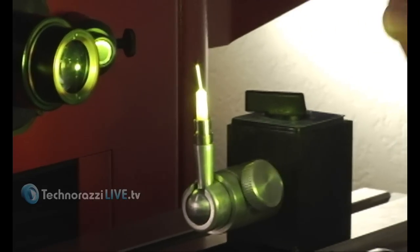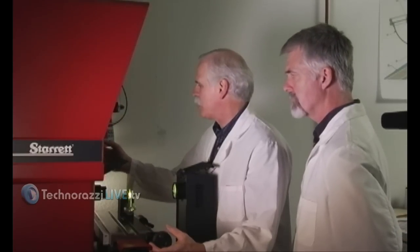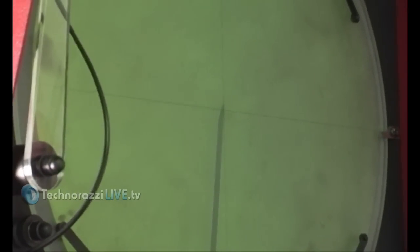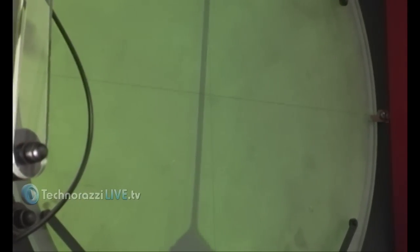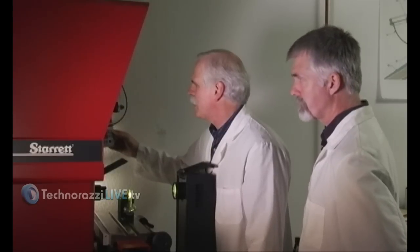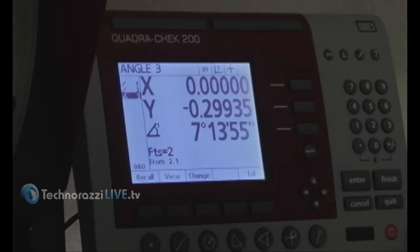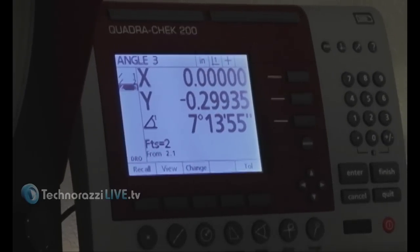Angle is another nice function. We can see the angle this needle is sitting at by taking an angle measurement. First I'll take a series of measurements straight up which will give us a reference line. Now we'll take the second series. So you're just bringing the edge of the needle to the crosshairs. And we'll press finish to show us the angle. That needle is sitting at a 7 degree, 13 minute, 55 second angle.